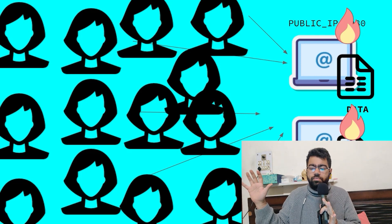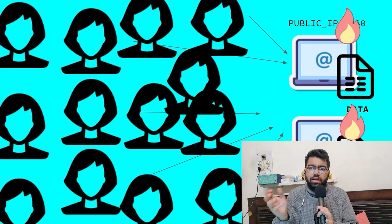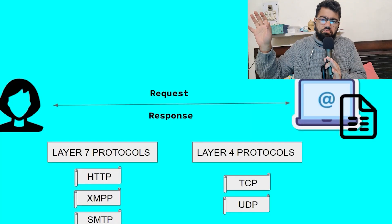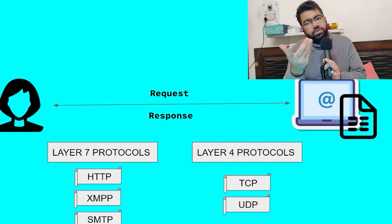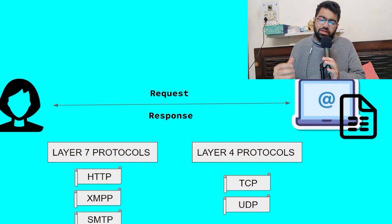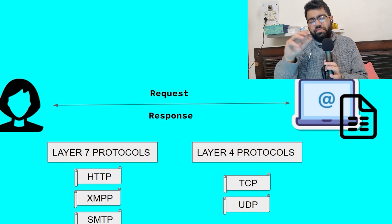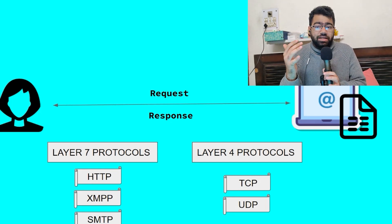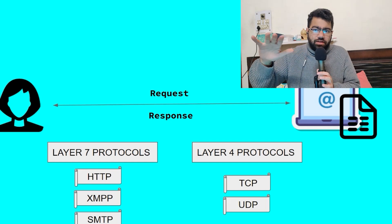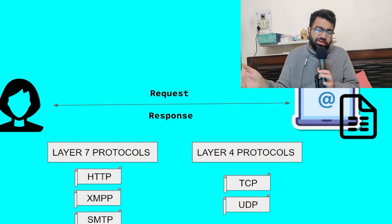Before understanding how to build this distributed system, let's first cover the basics of how request-response works. If I'm sending a request to a particular server, what will be the form of this request and what protocols will be used? Everything in any system is a combination of request and response — you send a request to access some data, you get a response. You do this in the form of APIs. Behind every API there is always a protocol being used, like HTTP for simple request-response.